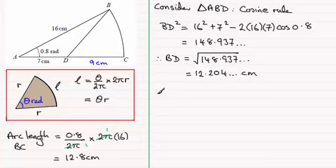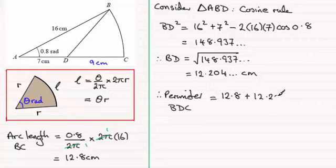So therefore the perimeter of BDC is going to be equal to the arc length 12.8 plus the length BD, which is 12.204 and so on, plus the length DC, which is 9. And adding that up we end up with 34.004 and so on.